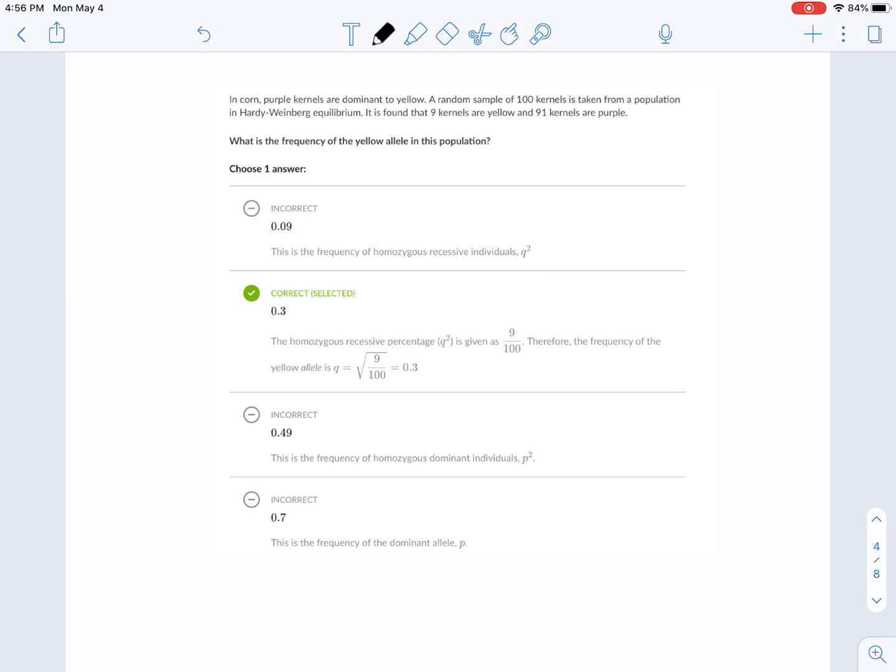So we are correct. And again, this is all the possible answers. And if you got the wrong answers, it tells you kind of what you did. But we did homozygous recessive percentage, which is Q squared, is given. That's from the question. It says it in the question. Therefore, the frequency of the yellow allele, the recessive allele, is equal to Q. So all you have to do is square root to find your answer. That's how that one works.